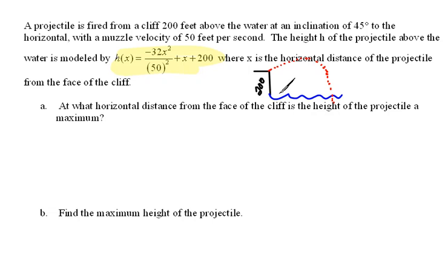So when we're talking about the x and the y axis here, the x axis refers to the distance out from the base of the cliff, and the y axis refers to the height of the projectile. So when it says, at what horizontal distance from the face of the cliff is the height of the projectile a maximum?